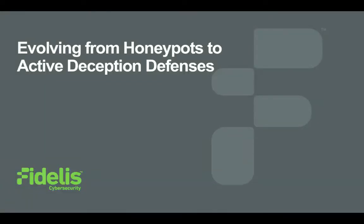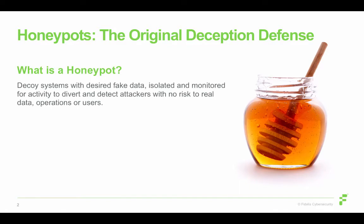Evolving from honeypots to active deception defenses. The story begins with the original deception defense, the honeypot. It's a decoy system — a full real operating system set up with desired fake data, often back in the day credit card data or fake credentials. It's isolated off in its own little environment, monitored for activity. The goal is to divert and detect attackers with no real risk to data, operations, or users.